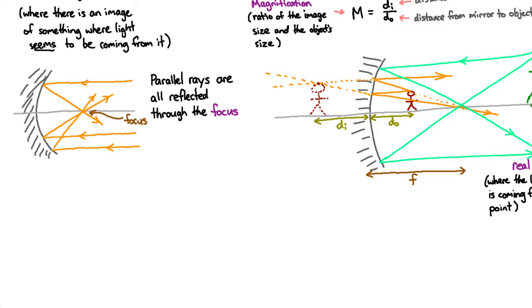You can work out how images work for converging lenses in exactly the same way you do for mirrors. If we have a focus for a lens, we have to have a focus on either side because light rays could go either way through a lens.